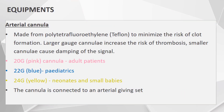Coming to the equipment, we arrange for the arterial cannula, which is made from polytetrafluoroethylene, which is Teflon, and it minimizes the risk of clot formation. The larger gauge cannula can increase the risk of thrombosis, and a smaller cannula can cause damping of the signal, so the appropriate size has to be chosen. In adult patients we use a 20-gauge pink cannula, in pediatric patients we use a 22-gauge blue cannula, and in neonates and small babies we use a 24-gauge yellow cannula.